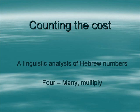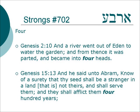Shalom and welcome to Counting the Cost, a Linguistic Analysis of Hebrew Numbers. Today we will cover the number 4. The root meaning is many or multiply. The word for 4 in Hebrew is Arba. This is used as a cardinal number for counting: 1, 2, 3, 4.